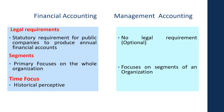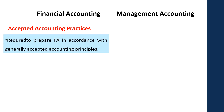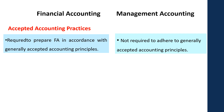Then the time focus: in financial accounting it's a historical perspective, but when it comes to management accounting, the focus is on the future. Now let's see how accepted accounting practices vary between financial accounting and management accounting. In financial accounting, you have to prepare financial accounts in accordance with the generally accepted accounting principles. But in management accounting, it is not required to adhere to GAAP.